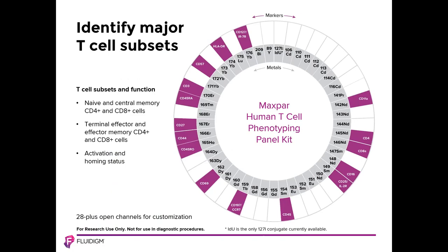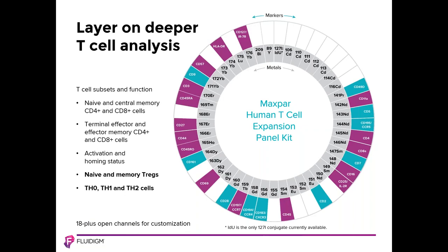Now I'll show you how our panel kits can be easily combined into larger panels. This example is the MaxPar Human T-Cell Phenotyping Panel Kit, which includes 16 markers strategically spaced on the 44 available metal channels. This panel identifies naive and central memory subsets, terminal effector and effector memory subsets, as well as homing and activation status in both CD4 and CD8 T-cells, with 28 channels still available. To this 16-marker T-cell Phenotyping Panel, we can now add the 10-marker T-cell Expansion Panel Kit. These added markers enable identification of five additional T-cell subsets: naive and memory regulatory T-cells, as well as TH0, TH1, and TH2 subsets, leaving 18 channels available.